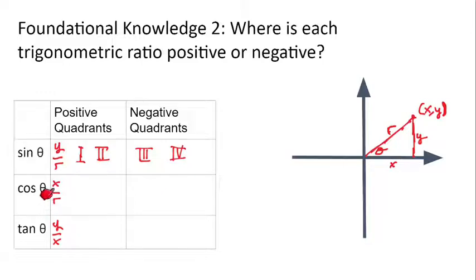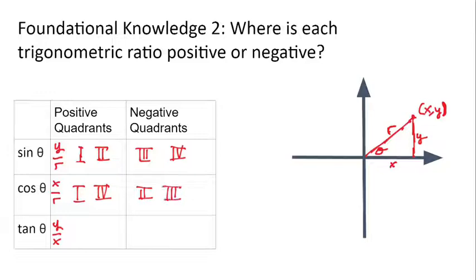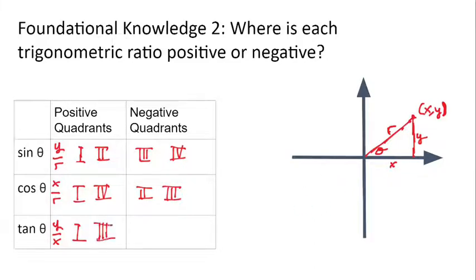For cosine, it's going to be positive anywhere x is positive. X is positive to the right on the x-axis, so that's in quadrants 1 and 4 — meaning quadrants 2 and 3 are negative. Tangent is y divided by x. A negative divided by a negative is positive, and a positive divided by a positive is positive. So tangent is positive anytime y and x have the same sign: both positive in quadrant 1, both negative in quadrant 3. Quadrants 2 and 4 give a negative tangent.